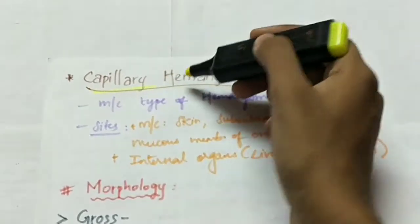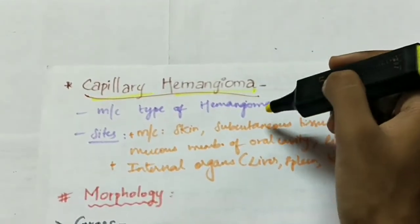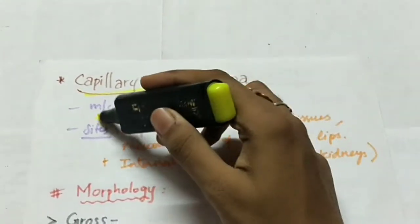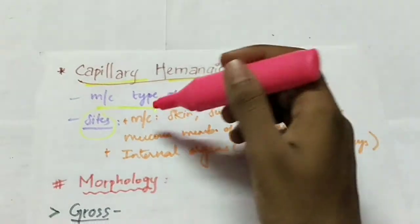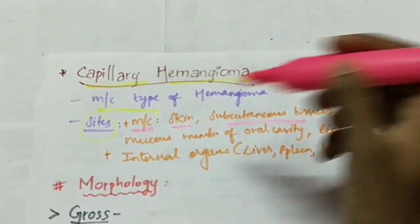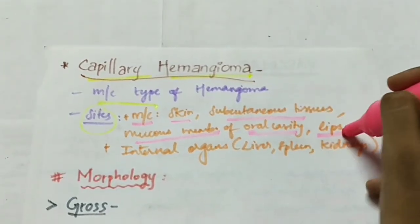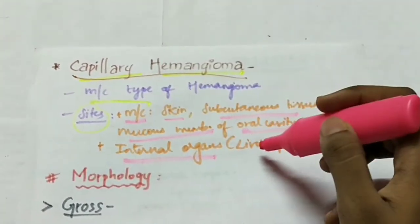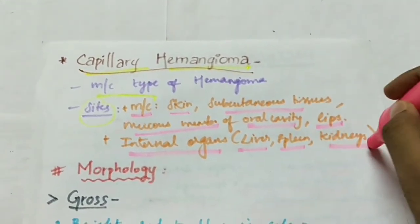Firstly, the capillary hemangioma, which is the most common type of hemangioma. The sites involved are most commonly the vessels of skin, subcutaneous tissue, and the mucous membrane of the oral cavity and lips. It can also involve internal organs like the liver, spleen, and kidneys.